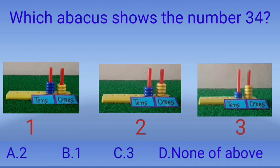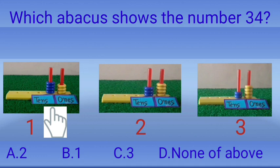Now we will solve a practice related question. Which abacus shows the number thirty-four? Look children, there are some abacuses. Count the beads and tell me which abacus shows thirty-four. Firstly, we will count the beads in the first abacus: one, two, three, four — four beads in tens row; one, two, three — three beads in one's row. First abacus shows the number forty-three.